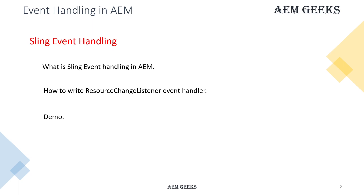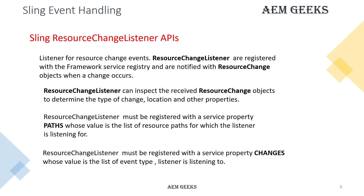The ResourceChangeListener interface is used to write your handler using Sling APIs. This handler is registered with the framework, and the framework will provide you a list of ResourceChange objects when the event is triggered. From the ResourceChange object you can get required information like what kind of event occurred, the location, and other properties needed to perform any action.